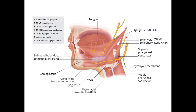Back here is the glossopharyngeal nerve, cranial nerve nine, one of the four cranial nerves — three, seven, nine, and ten — that carry parasympathetics. The glossopharyngeal nerve innervates the stylopharyngeus and also the posterior one-third of the tongue, conveying taste fibers from there. So if asked what provides taste to the tongue: the anterior two-thirds are supplied via the chorda tympani from the facial nerve, and the posterior one-third by the glossopharyngeal nerve.